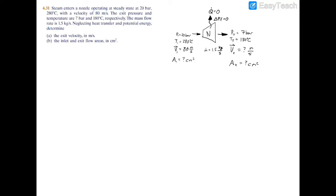In this problem we're working with steam entering through a nozzle, using the energy balance formula. I drew a schematic with the nozzle, inlet on the left and exit on the right. We have pressure, temperature, and velocity on either side. Heat transfer is neglected, equal to zero, and potential energy is also zero, meaning the inlet and exit are at the same elevation.